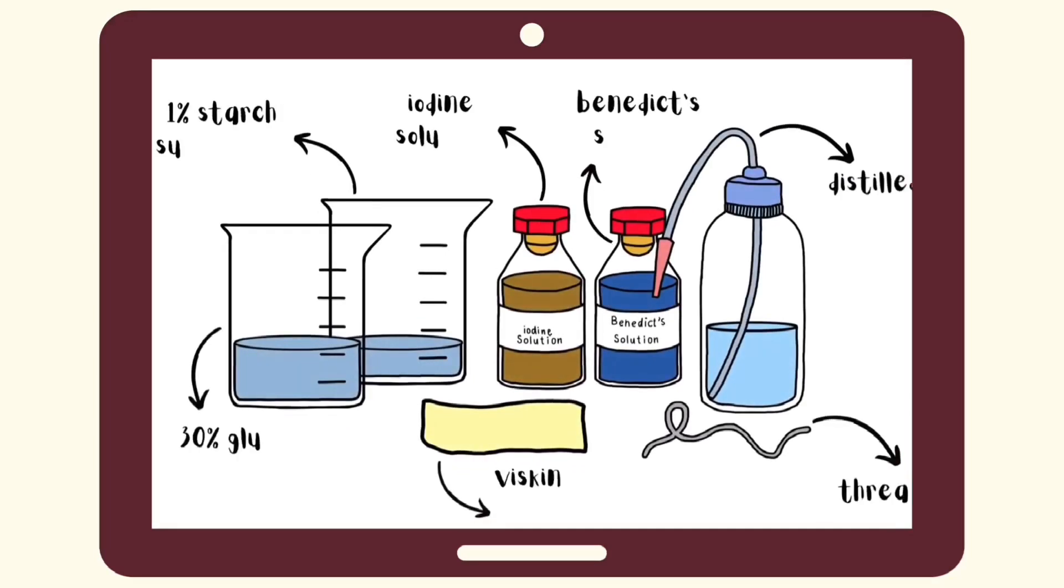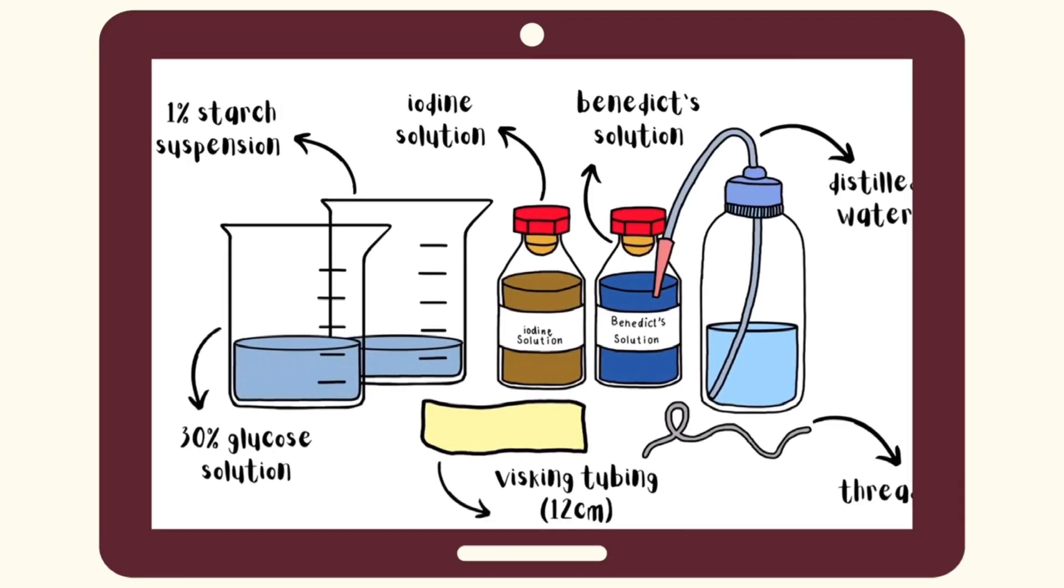The materials needed for this experiment are: benedict solution, 1% starch suspension, iodine solution, 30% glucose solution, distilled water, visking tubing, and thread.